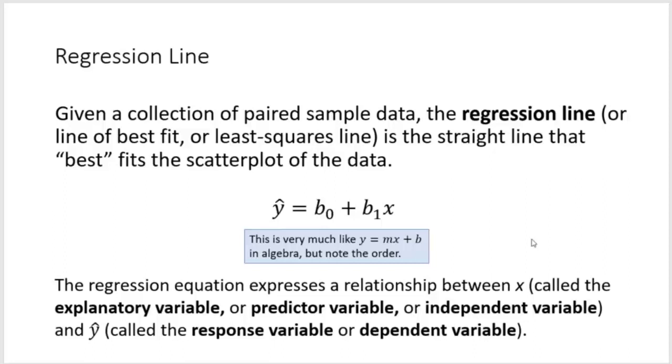So if we have a collection of paired sample data, the regression line, sometimes called the line of best fit or the least squares line. Usually if you've been introduced to it in an earlier grade, you just kind of visually try to get a line that's as close, it goes through the pack of dots with a balance above and below. But we're going to be doing it more precisely. The formulas used have to do with minimizing the distances.